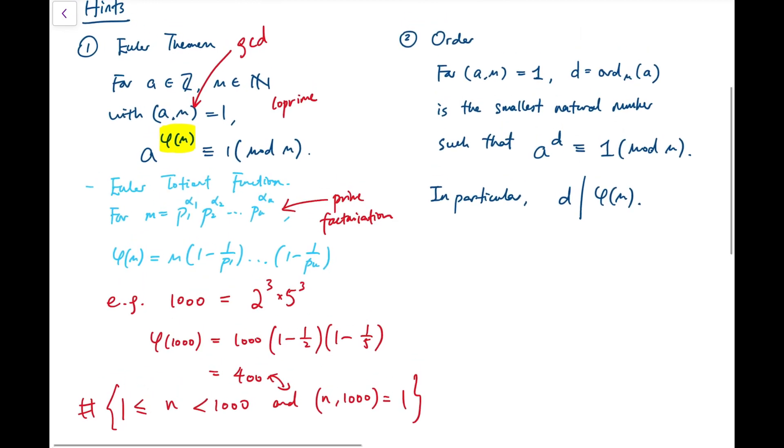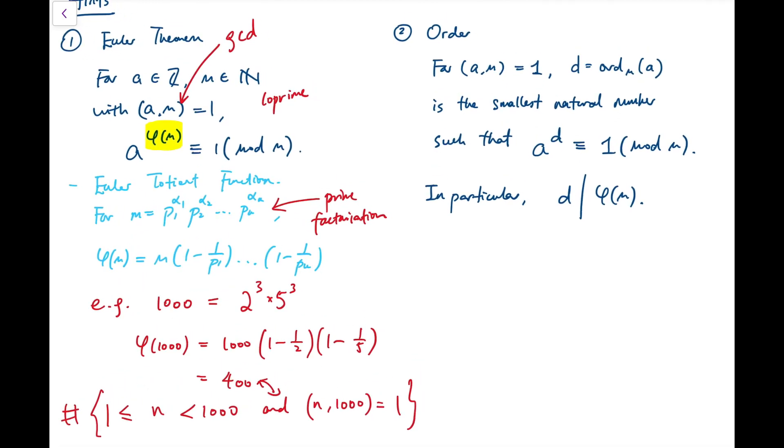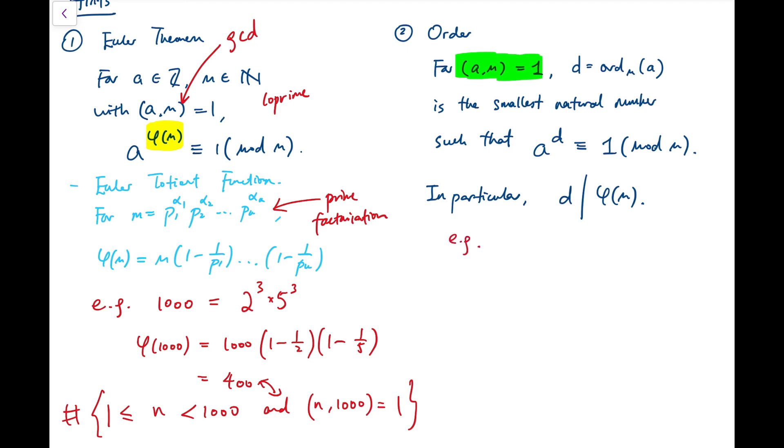Now, the second tool is about the term order. Order is referring to the smallest natural number, such that powers of a will return to 1 mod m. So I keep multiplying a by itself, multiplying power by power, and then at some point I should reach 1 mod m, if given that a and m are numbers that are again coprime. For example, I'm saying 2 mod 7, so the first number is 2, 2¹, and 2² is 4, 2³ is 8, 2⁴ is 16, 32, 64, etc.